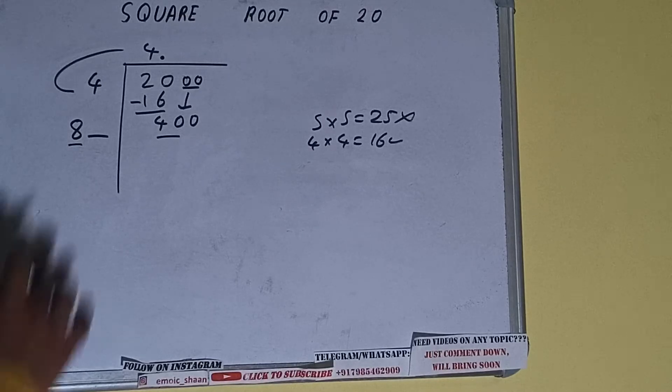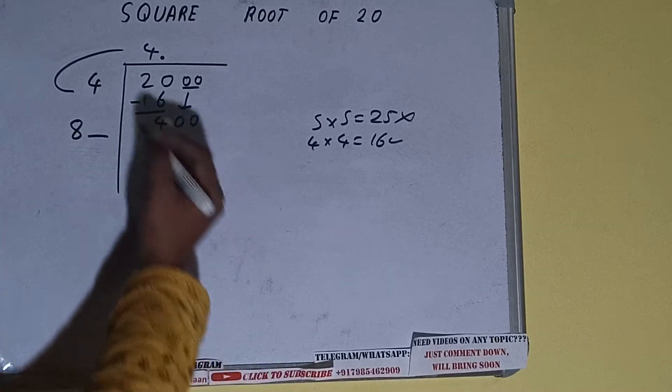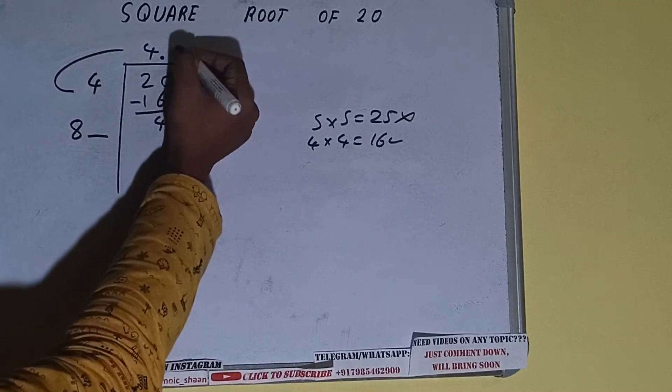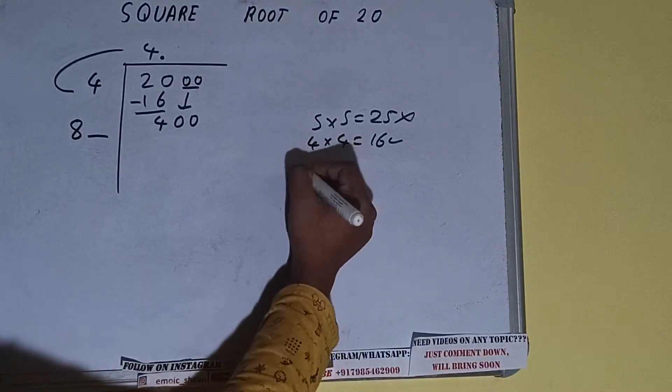So 8 times 5 is 40, right? Rule is: whatever number we write here, we have to write here also. So let's try.